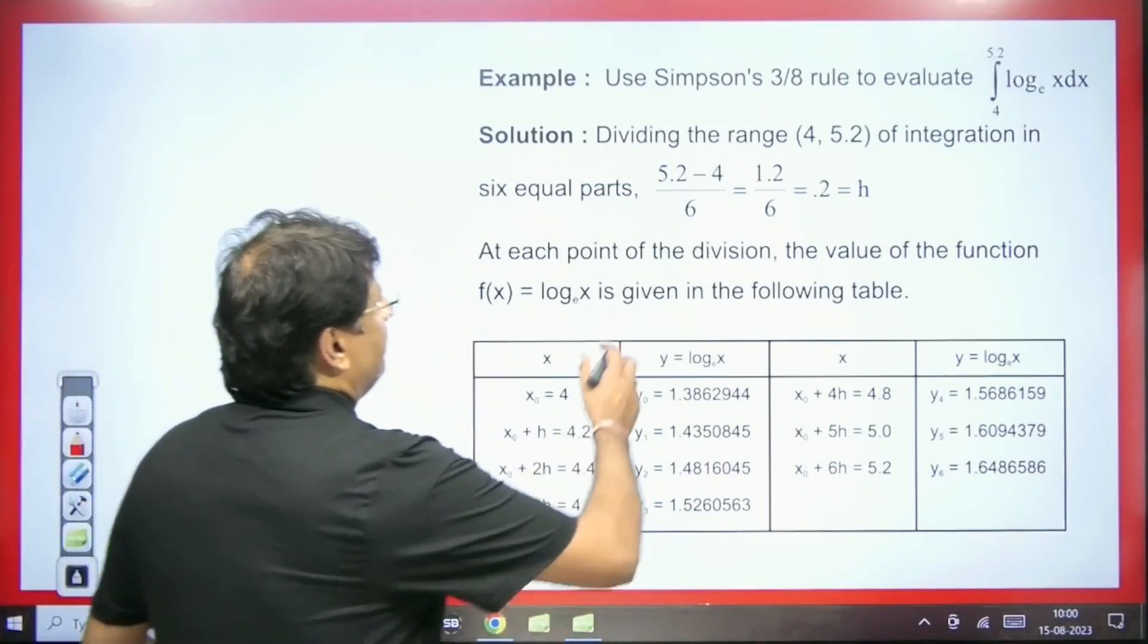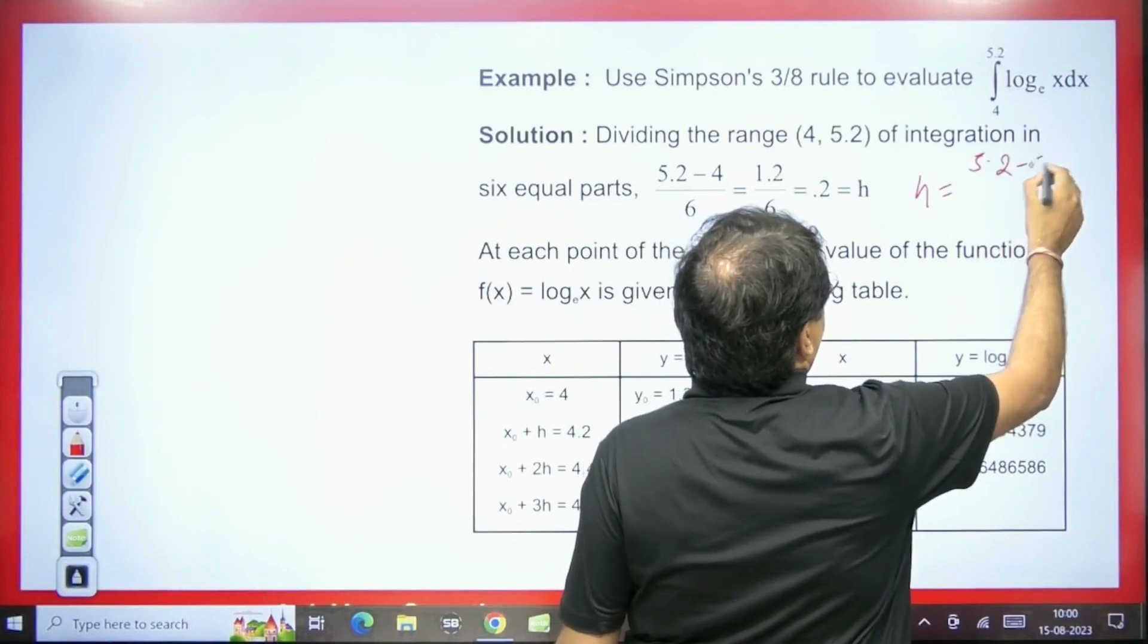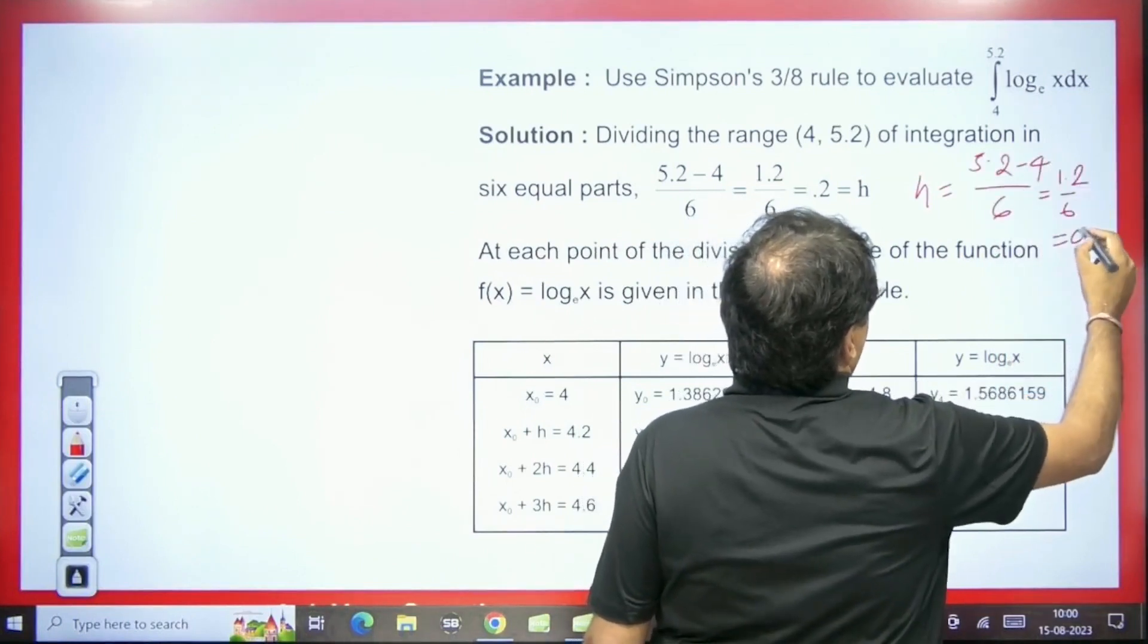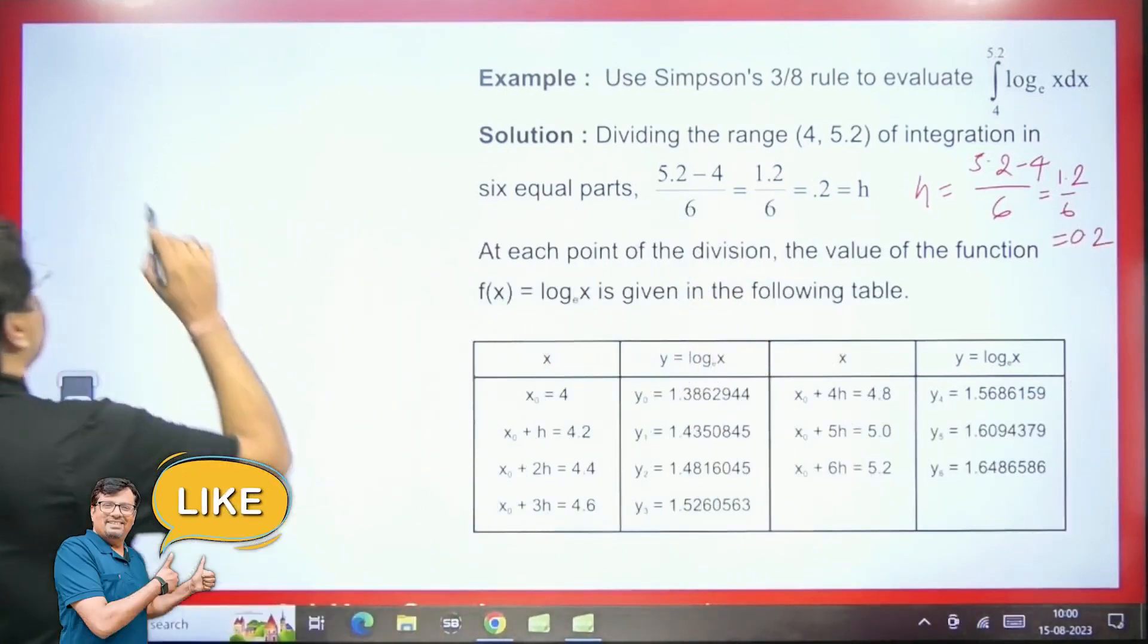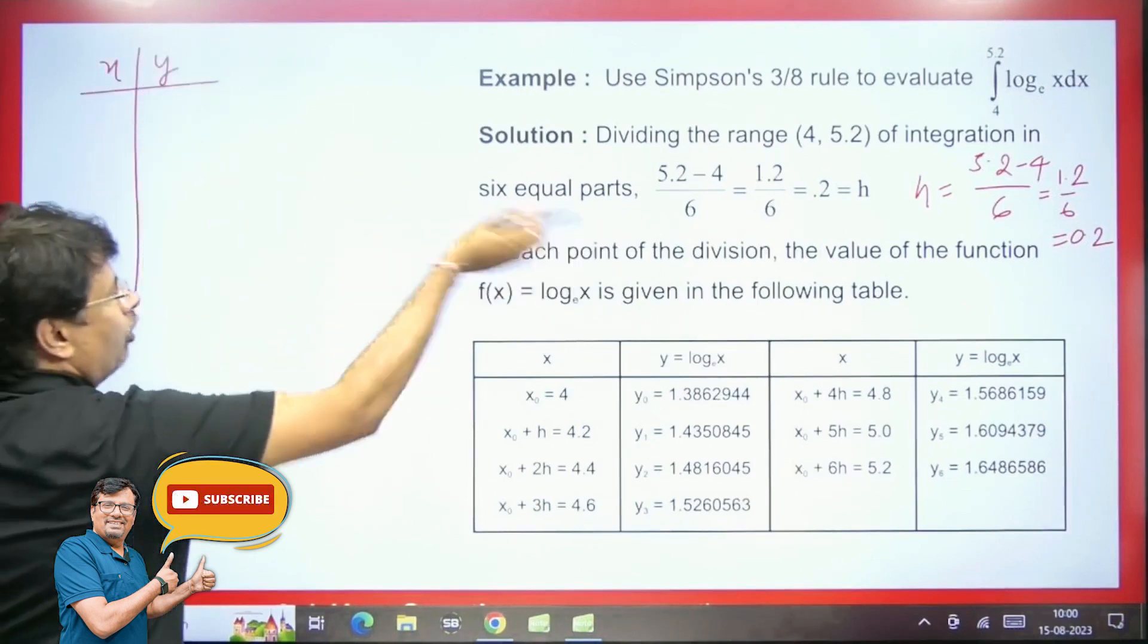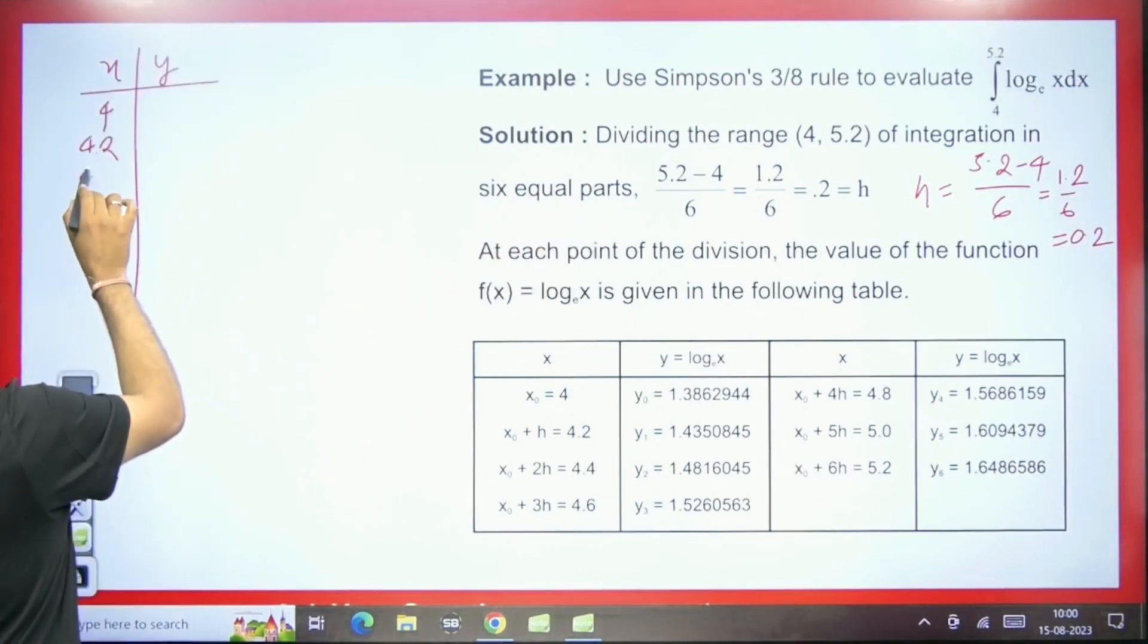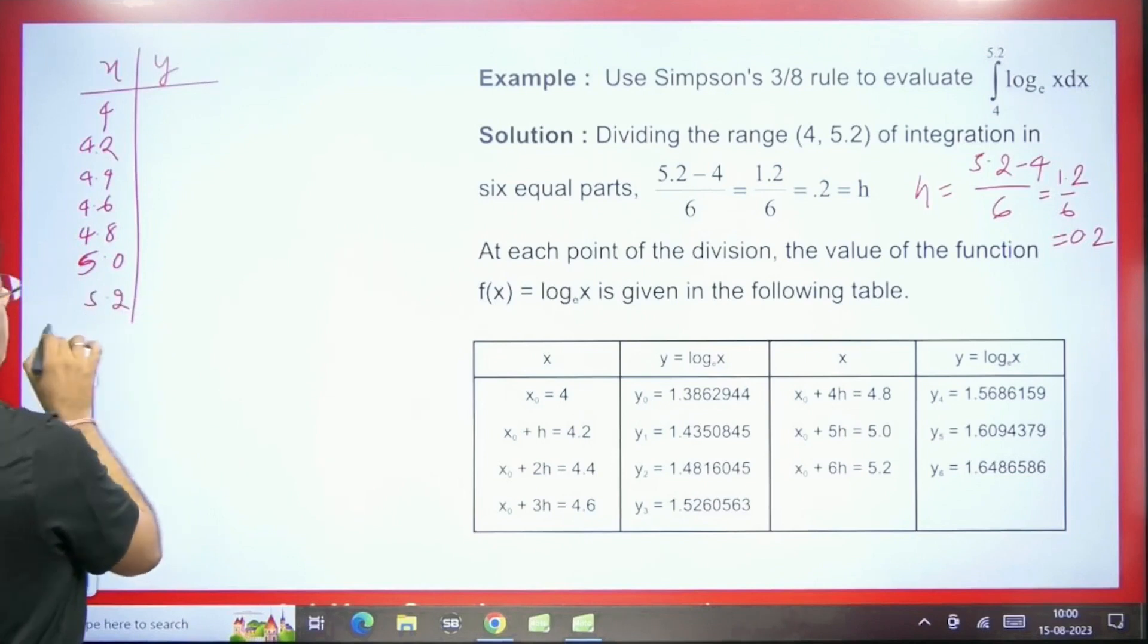What we do to divide in intervals? H is equal to upper limit minus lower limit divided by 6. So it will be 1.2 by 6 that is equal to 0.2. Then what will we do? Here we will write x and here we will write its corresponding y. So here we will start with the lower limit. So 4. Then we will add 0.2 to it like 4.2, 4.4, 4.6, 4.8, 5.0, and next will be 5.2. It will come according to this.